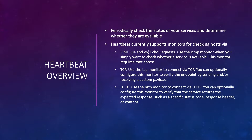If it gets a successful ping it shows as up, and if unsuccessful it shows that monitor as down. Next, you can configure a TCP monitor, which allows you to connect to a particular endpoint through TCP. You can also modify this monitor to check that the endpoint is up by receiving a custom payload. Third, you can configure an HTTP monitor to connect via HTTP to your endpoints.